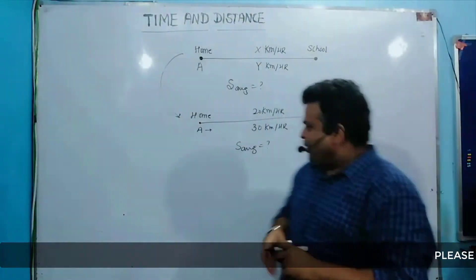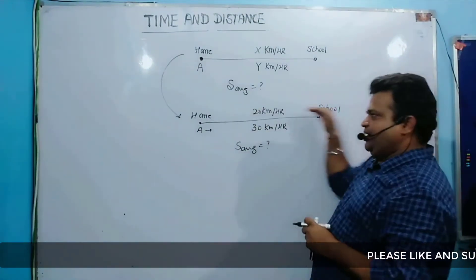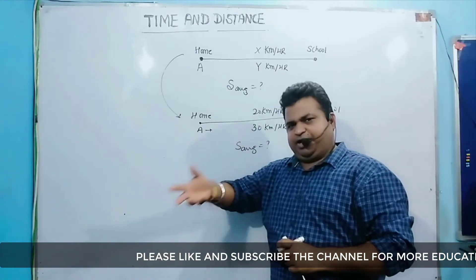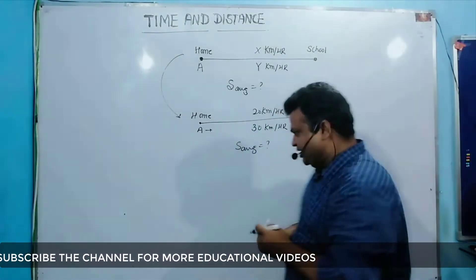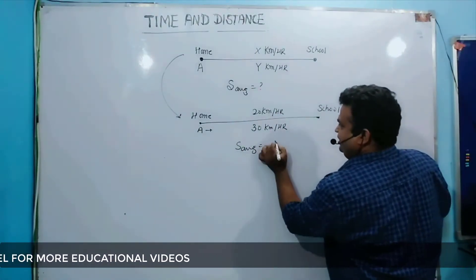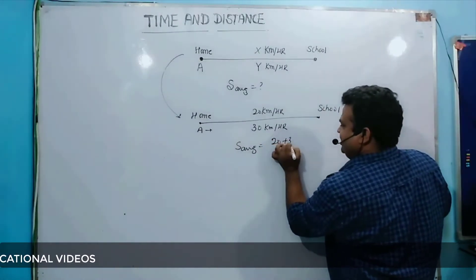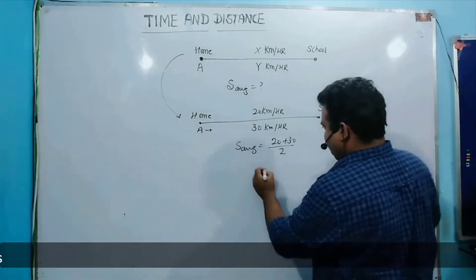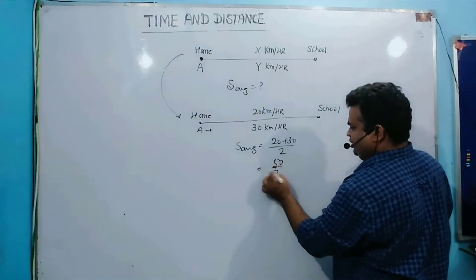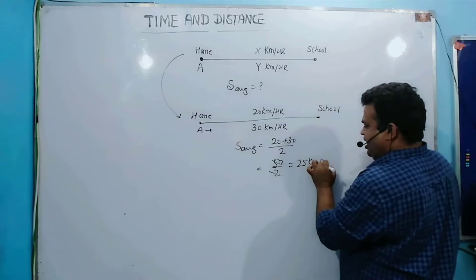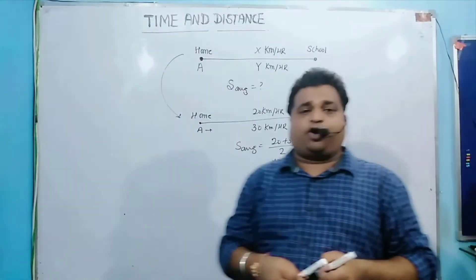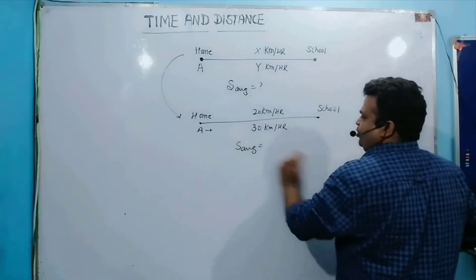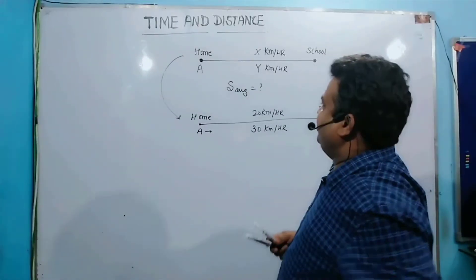When students do this problem, they think: 20 km in the onward journey and 30 km in the return journey. Most students make a mistake here — they calculate (20 + 30) divided by 2, which gives 50 by 2 and they get 25 km per hour. This is absolutely wrong. So how will you proceed? What is the correct formula in this case? This is a very, very important trick.